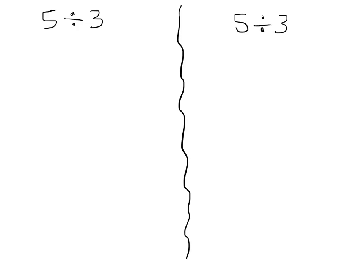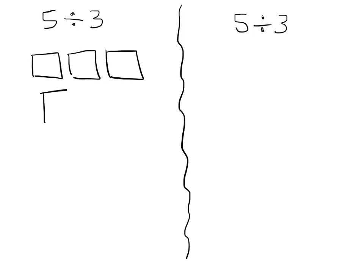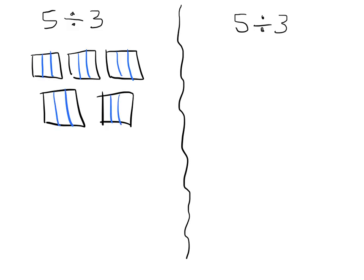If we think of 5 divided by 3, there are a couple of ways we can do this as a fraction. One way is to draw your 5 whole numbers — 1, 2, 3, 4, 5 — and then cut each one of them into thirds, into 3 pieces. Why are we cutting each one into 3 pieces? Because it says so right here in the problem.